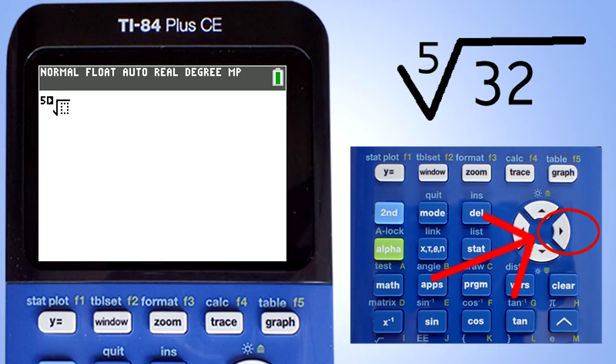Now press the right arrow key to move the cursor into the radical sign. Now enter 32 and press the right arrow key. Press the enter key to get the answer. And there is the answer, 2.